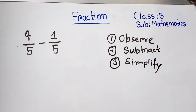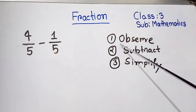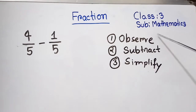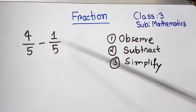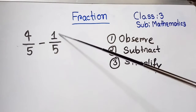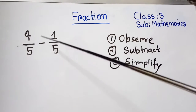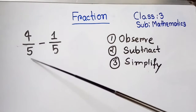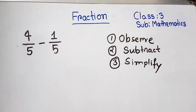As with addition, we have three steps for subtraction: first observe, then subtract if needed, then simplify. The first step is to make sure the denominators are the same. Here our problem is 4/5 minus 1/5 — both fractions have a denominator of five, so we move to the next step.